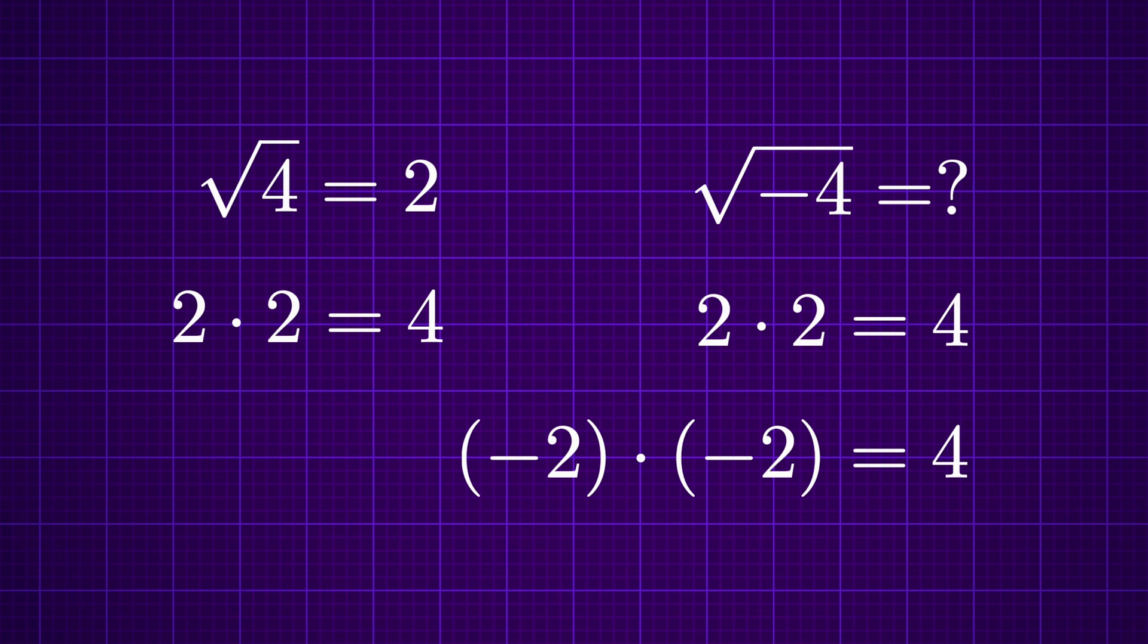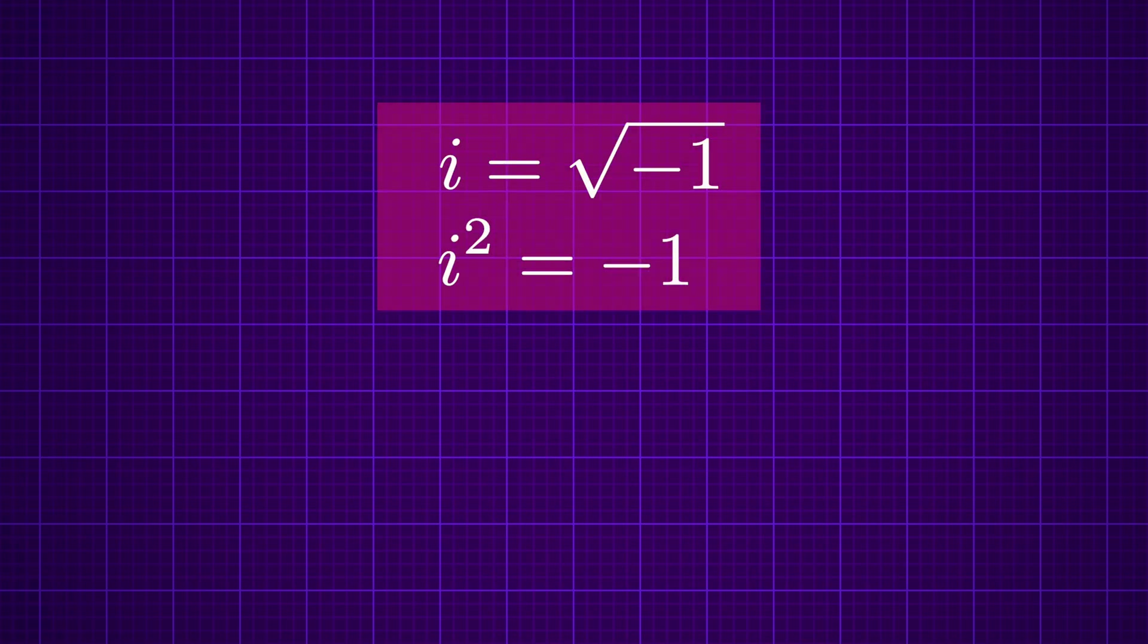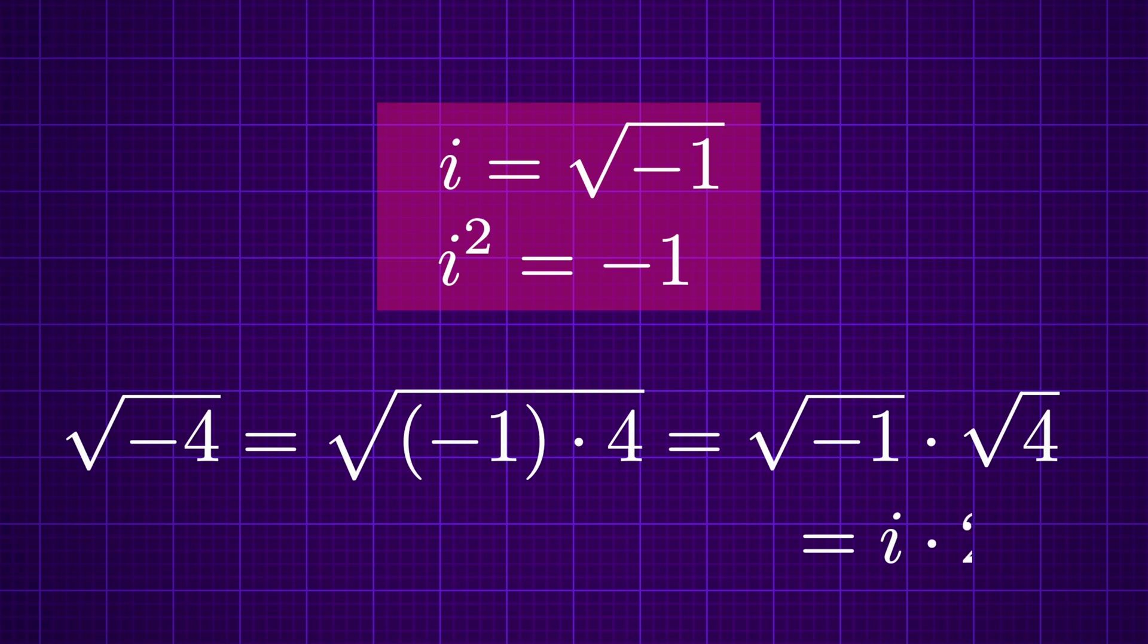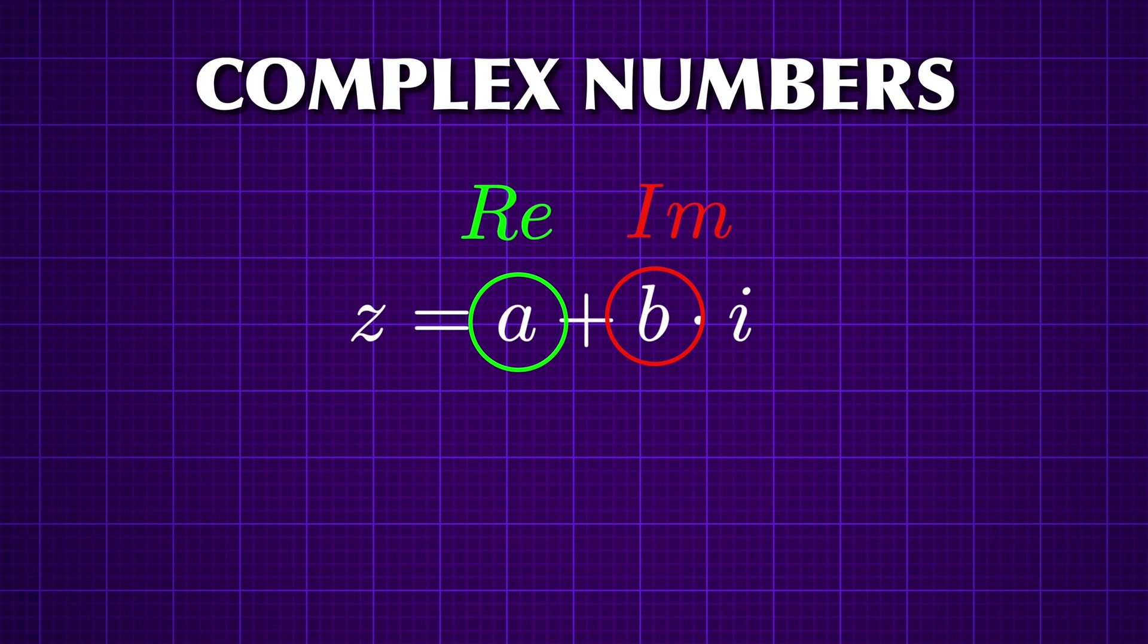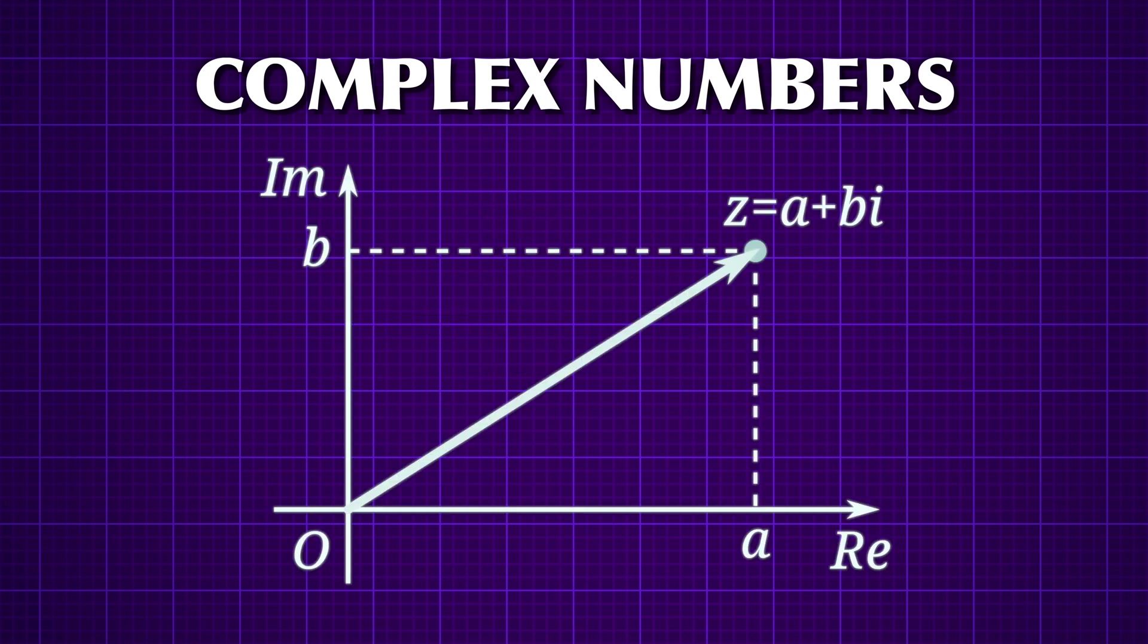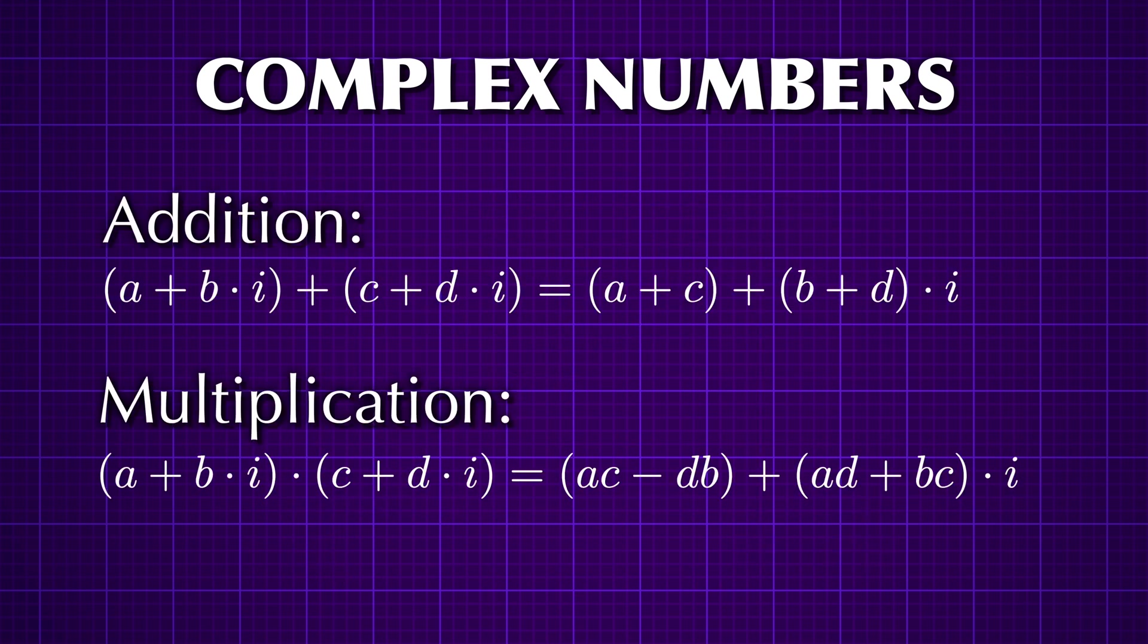So if all existing numbers fail, what if we just invent a new number called i and define it as the square root of minus 1? Or equivalently, i squared equals minus 1. This immediately gives each negative number a square root. You can always factor out the minus 1, which gives you i, and then extract the root normally. This simple definition already gives you complex numbers, which in general have a real part and an imaginary part. You can draw them as a vector and define addition and multiplication.